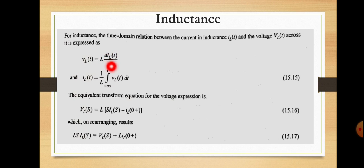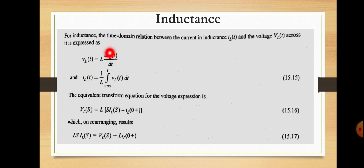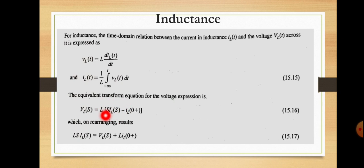Since L is a constant it comes outside, and the Laplace transform of the derivative gives: Vl(s) = L × [s × il(s) − il(0+)], where s × il(s) is the transform of the derivative and il(0+) is the initial condition. This is the transform equation for the voltage. Rearranging: Vl(s) + L × il(0+) = Ls × il(s).